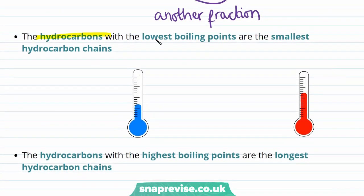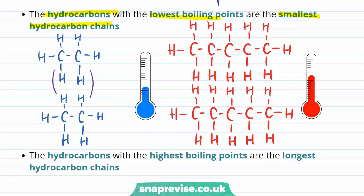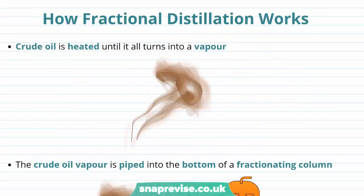The hydrocarbons with the lowest boiling point are those with the smallest hydrocarbon chains. A small hydrocarbon such as ethane, which has just two carbon atoms, will have weaker intermolecular forces between molecules than larger alkanes such as pentane, which has five carbon atoms. For pentane, there are many more points of contact between any two molecules, leading to much stronger intermolecular forces. Stronger intermolecular forces require more energy to break, corresponding to a higher boiling point. The hydrocarbons with the highest boiling points are therefore those with the longest hydrocarbon chains. This is the key principle behind the fractional distillation experiment.